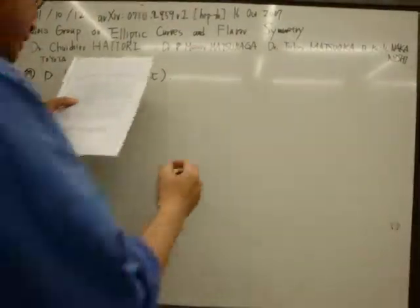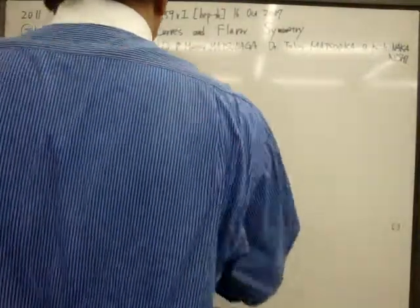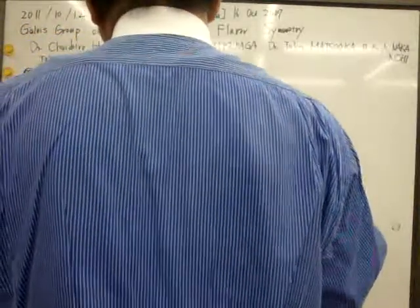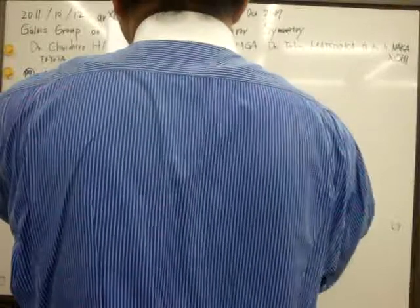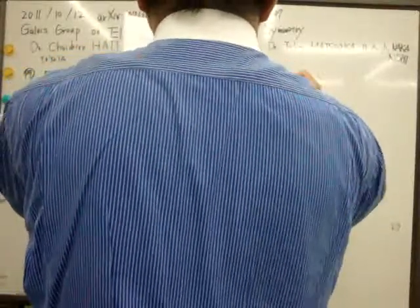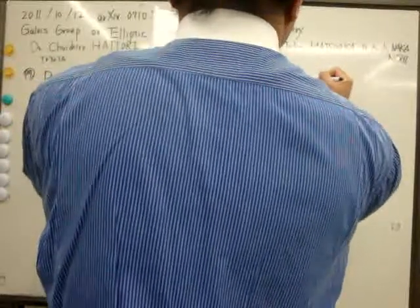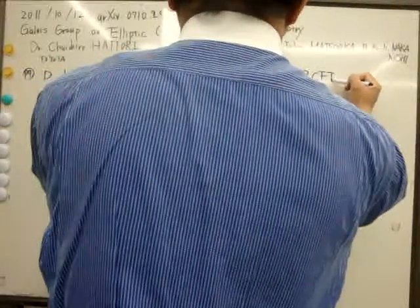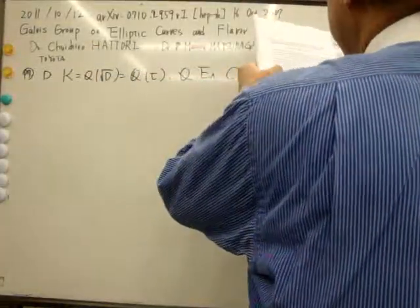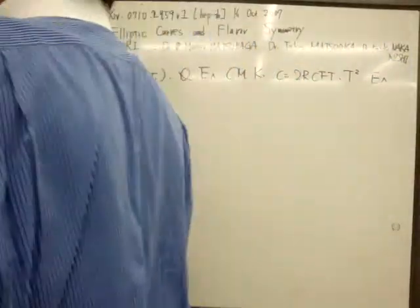This is the algebraic extension of Q associated with E Lambda. This means that E Lambda process CM by K equals to RCFT on T2. The key model of E Lambda also takes with value K.